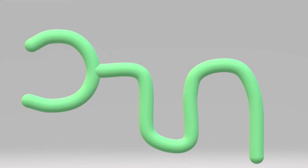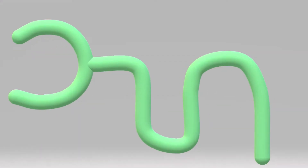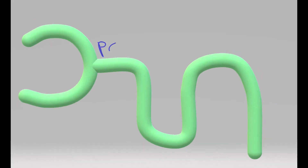Here we have our nephron. Here we have the proximal convoluted tubule, and here we have the distal convoluted tubule. Filtration goes in this direction, out into the collecting duct.